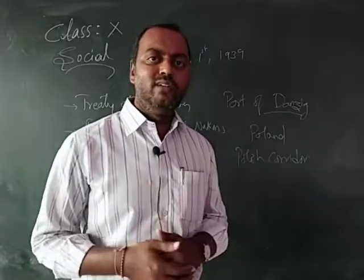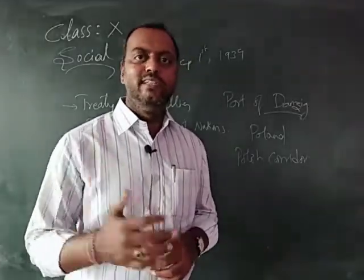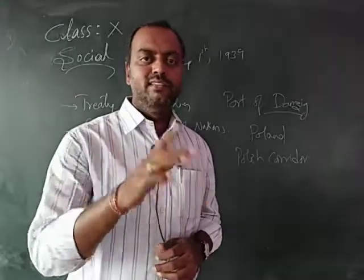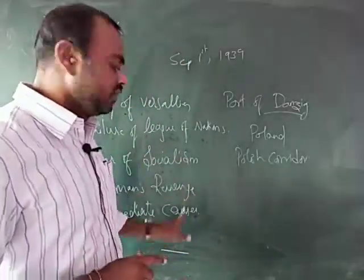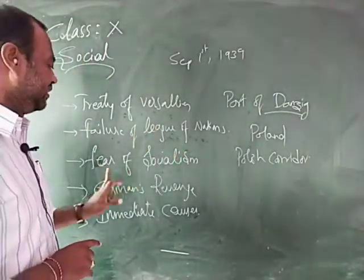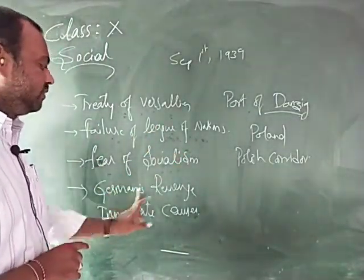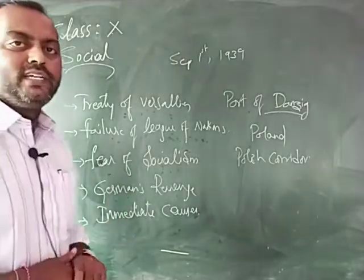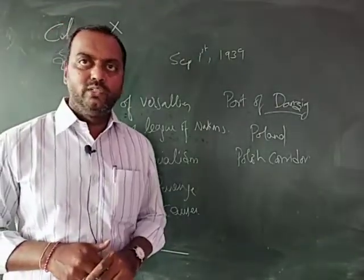What are the consequences of the war? And what was the course of the war? We shall see in the next class. Please remember to write down the causes for the World War II. That is the Treaty of Versailles, failure of League of Nations, fear of socialism and communism, Germany's revenge, and the immediate cause for the Second World War. Thank you, children.